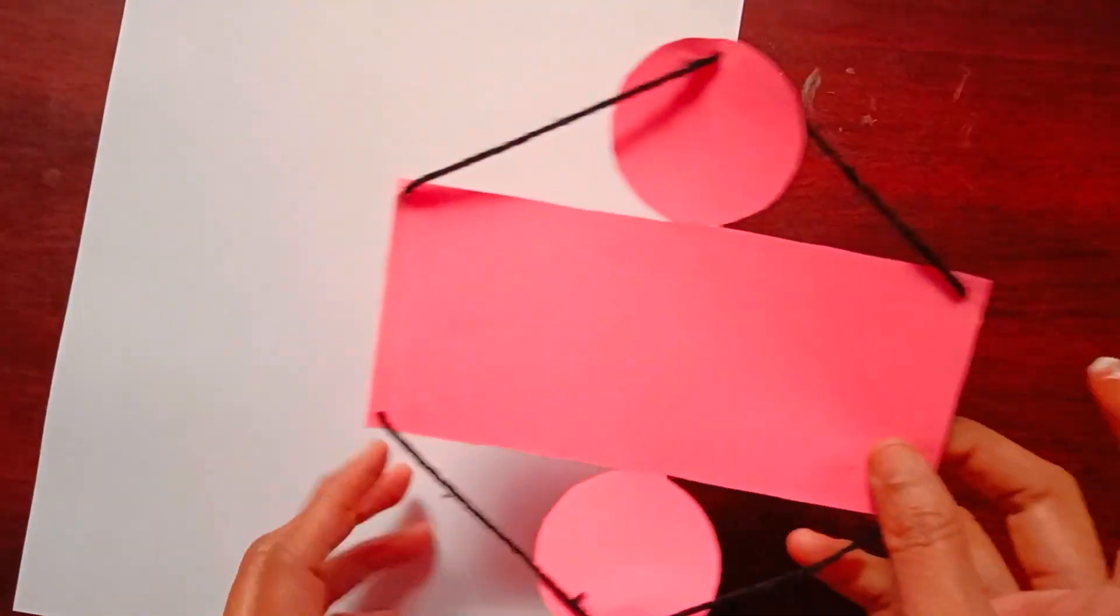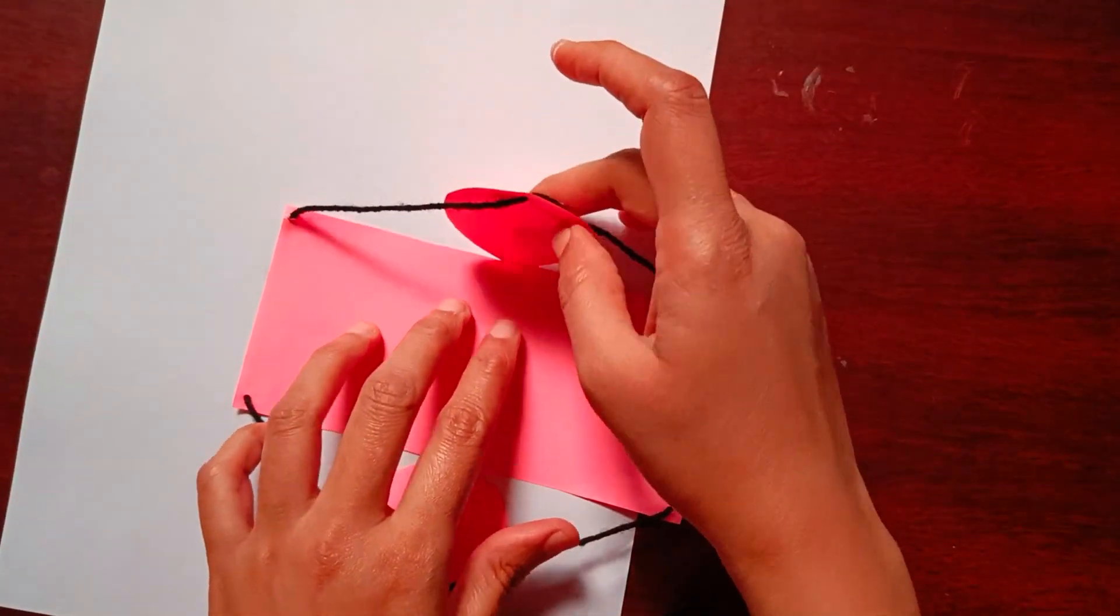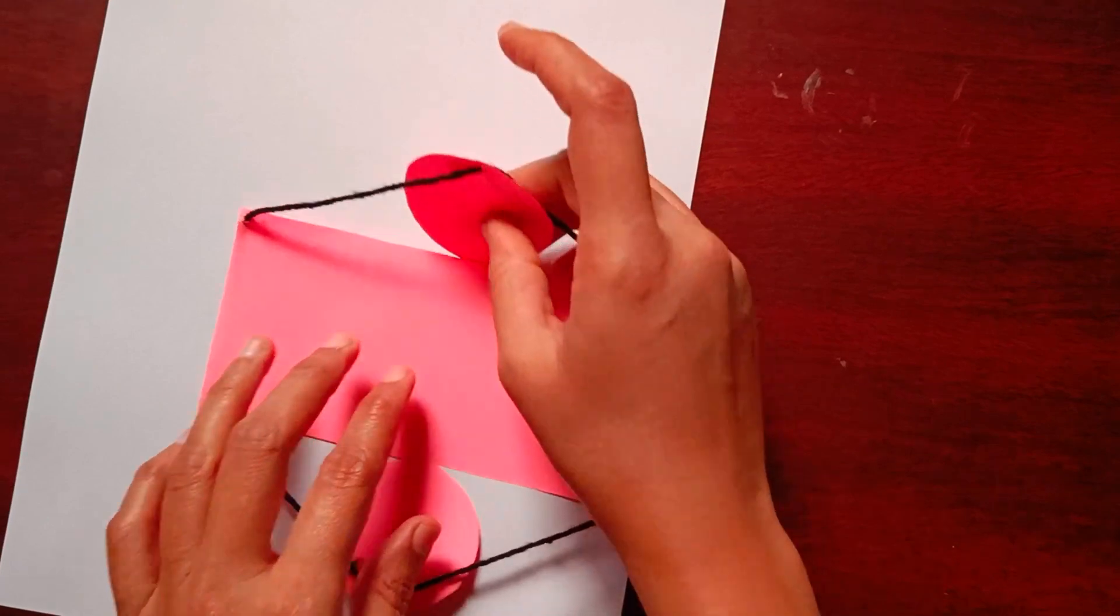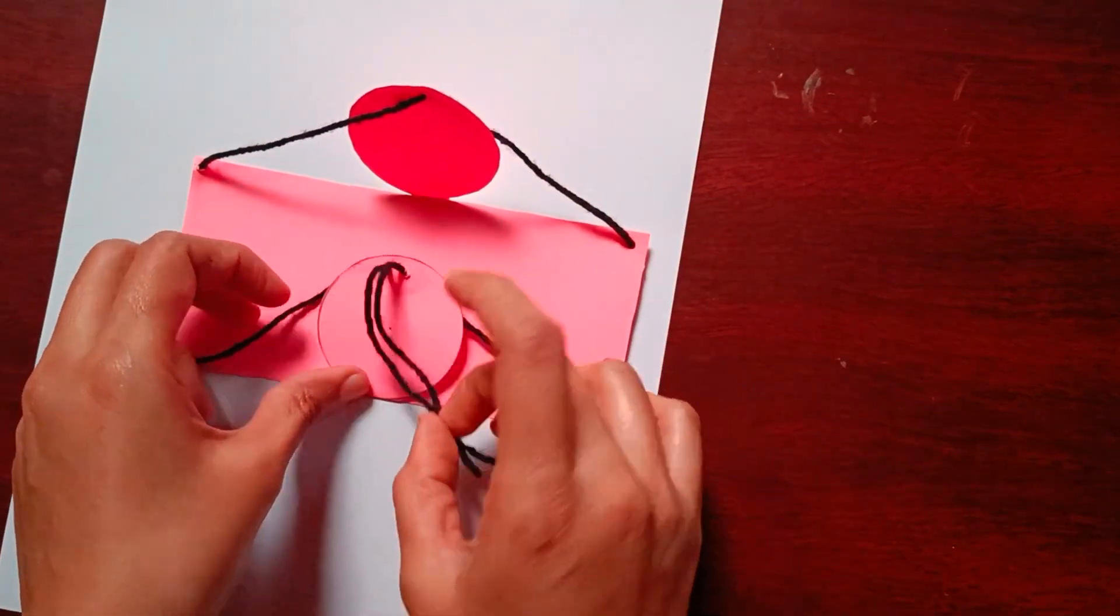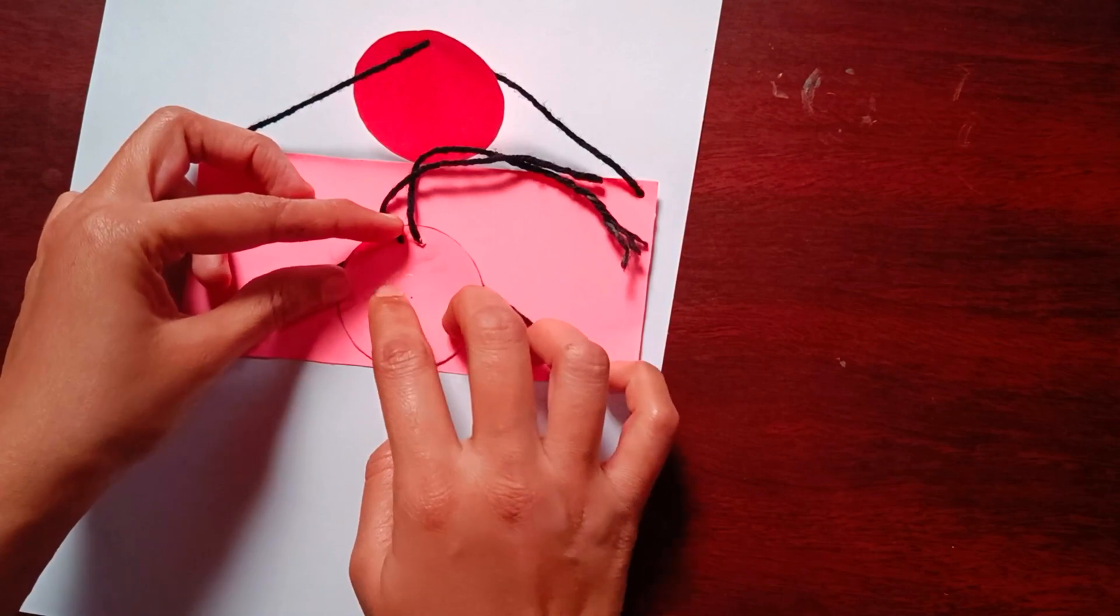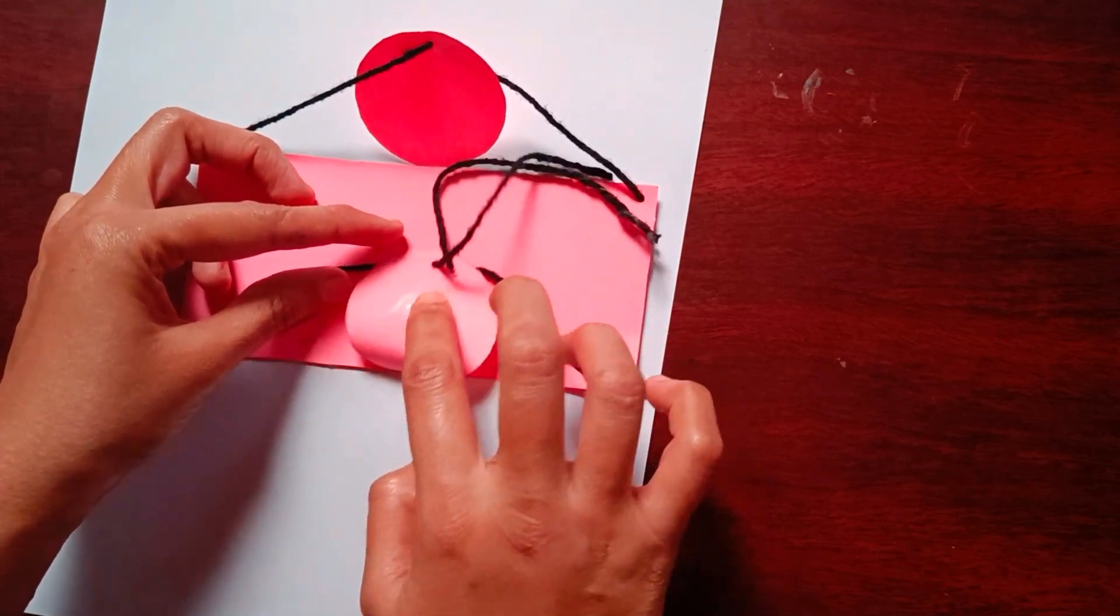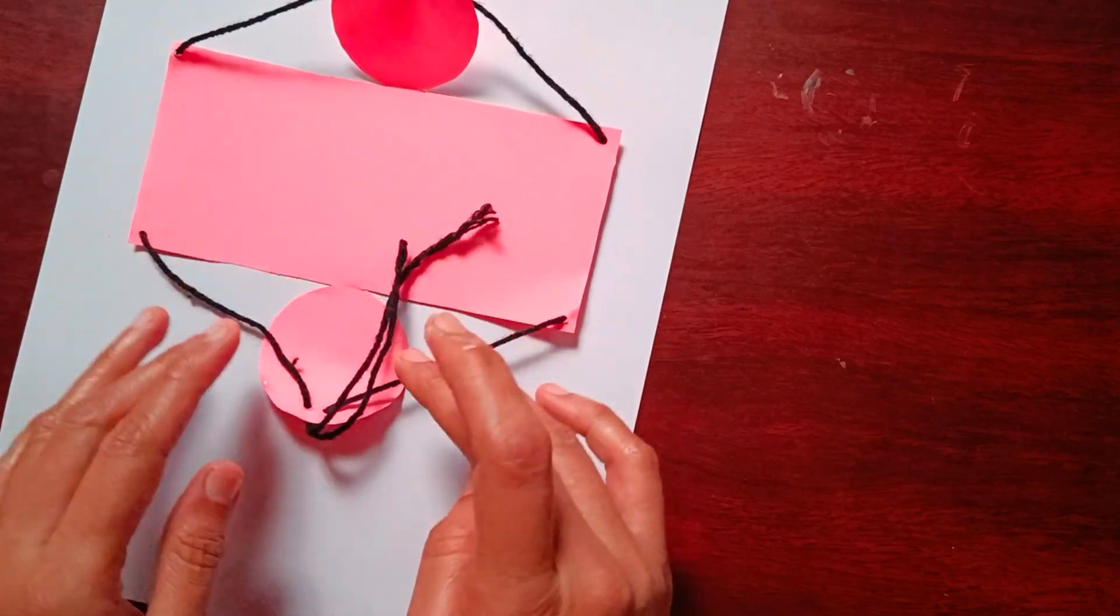Take a white sheet, we'll fold it here, here also like this, and I'm applying glue on it. We'll stick it like this.